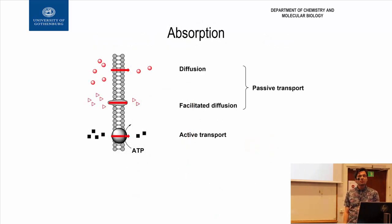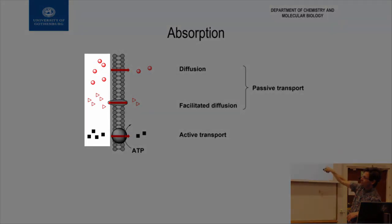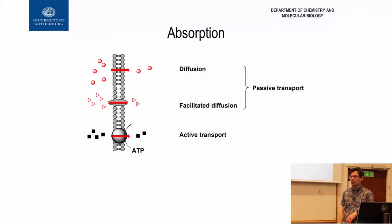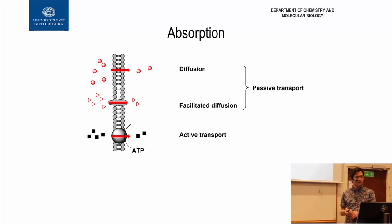If we focus on what's going on in the stomach or intestines, we have what we call absorption. Imagine this is the cell membrane in your stomach or intestines, and these circles, triangles, and squares are molecules we want to bring into the bloodstream. There are three main types of mechanisms: passive diffusion — it just goes by itself; facilitated diffusion — proteins help the molecules cross the membrane; and active transport — proteins use energy, ATP, to pull them over.